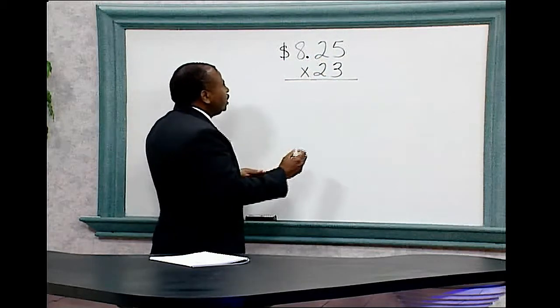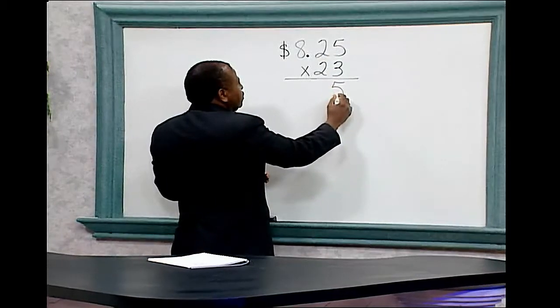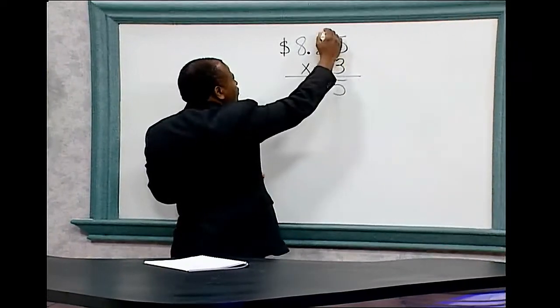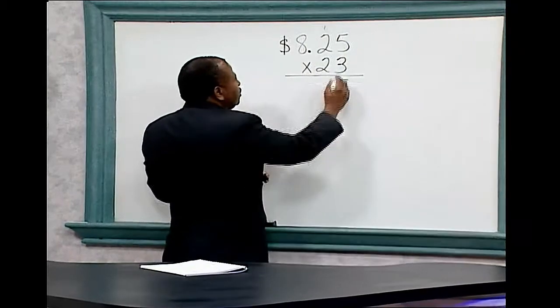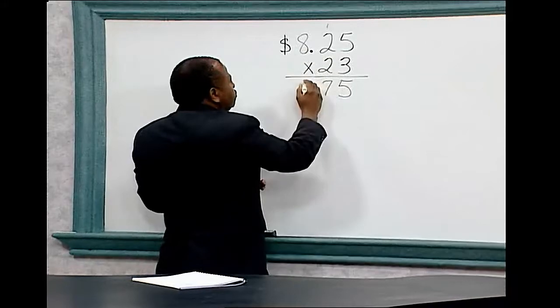We began by multiplying. 3 times 5 equals 15. Write 5, place the 1 above the 2. 3 times 2 is 6 plus 1 is 7. 3 times 8 is 24.